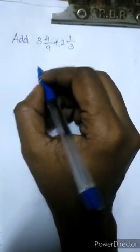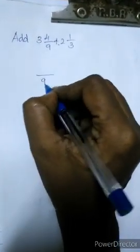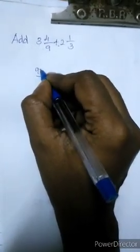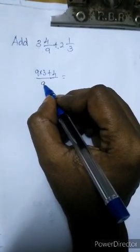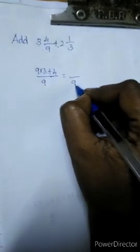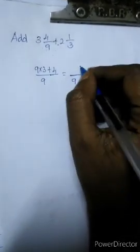How can we write? 9 times 3 is 27 plus 4. So what is the answer? 9 times 3 is 27.